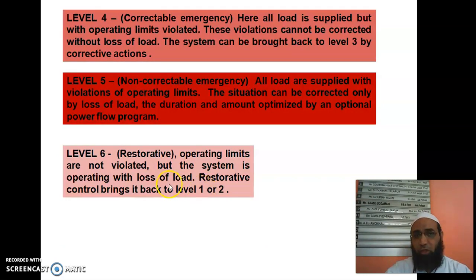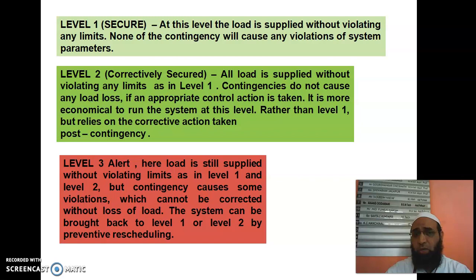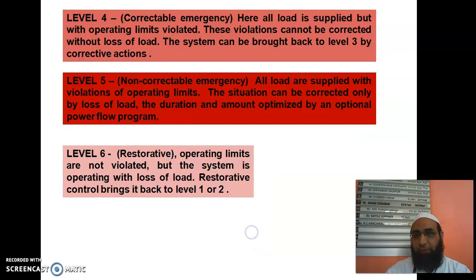Level 3 is the alert level. Load is still supplied without violating limits, as in levels 1 and 2. However, contingencies cause some violations which cannot be corrected without loss of load. The system can be brought back to level 1 or level 2 by preventive rescheduling.